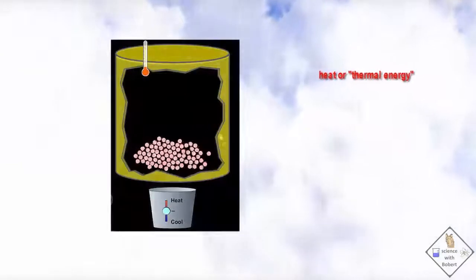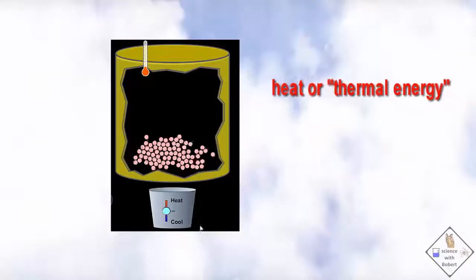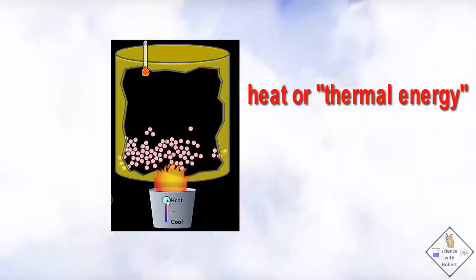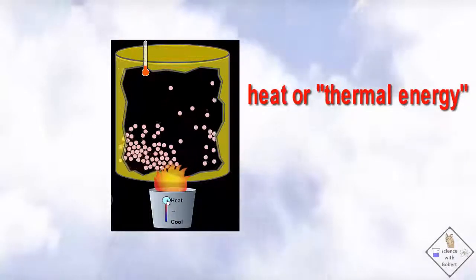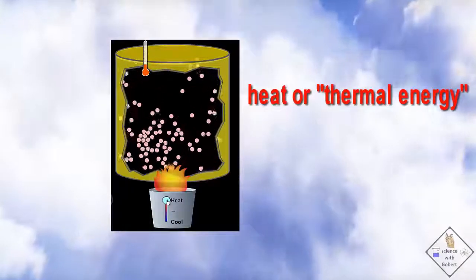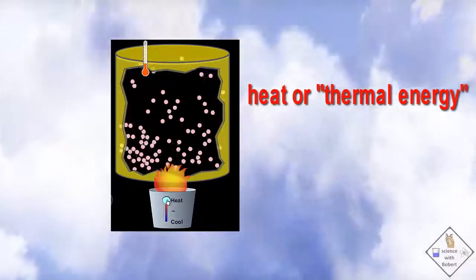Heat is a form of energy. It is also known as thermal energy. That's because when heat is absorbed by a substance, the random and chaotic motion of its molecules move faster in all directions.